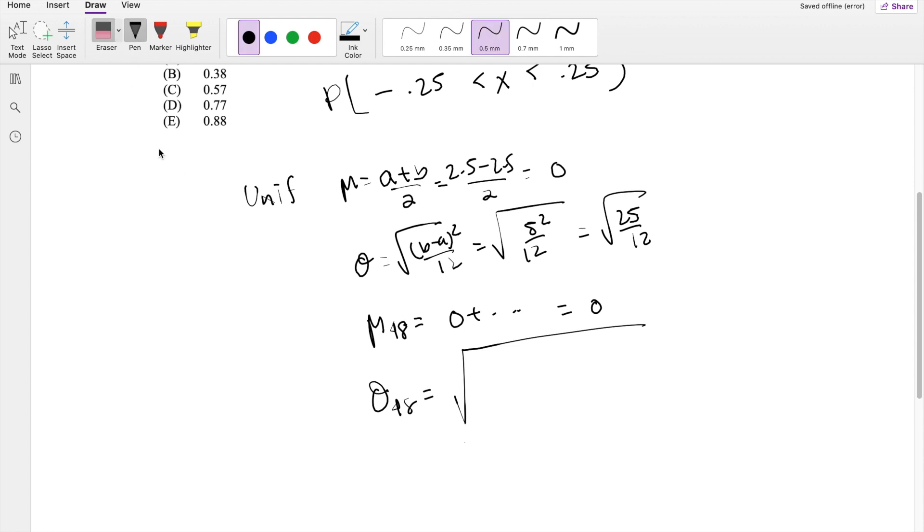And they're asking about the average, so remember, for average, we just have to add variance 1 plus variance 2, all the way to variance 48, divided by 48 squared.